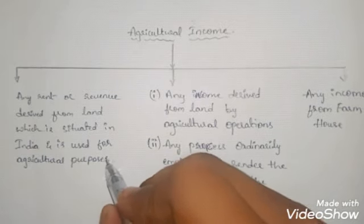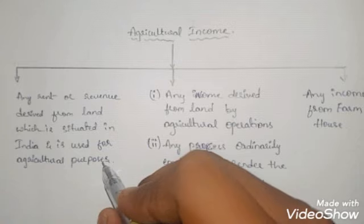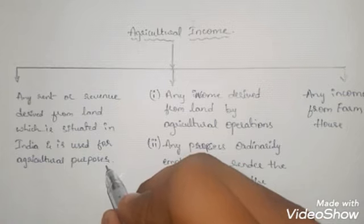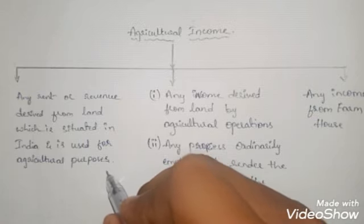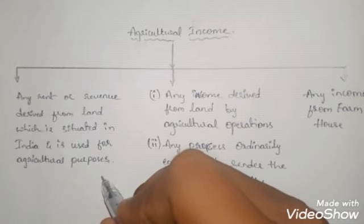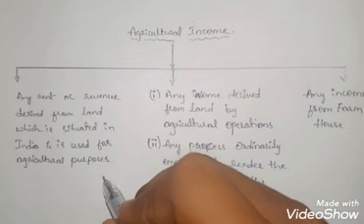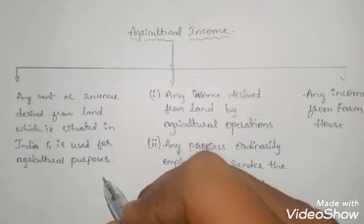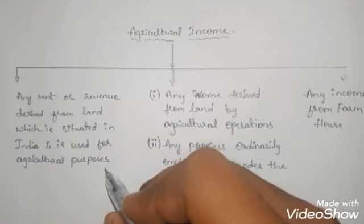If we have any land and it is given to others on a rental basis or for lease, the income received in the form of rent will be treated as agricultural income. There are two conditions: first, the land given for rent or lease must be used for agricultural purposes only — cultivation activities must be carried on that land. If the land is used for other purposes like construction of a building or commercial purposes, the revenue from it cannot be treated as agricultural income.